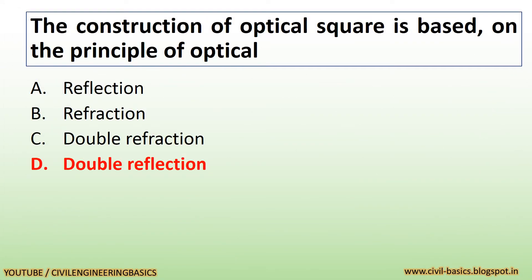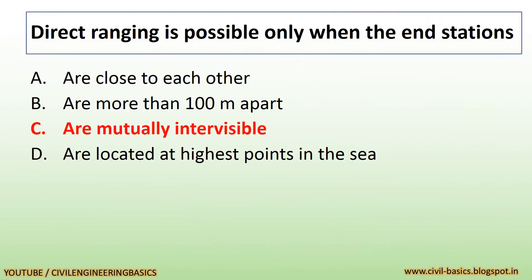The construction of an optical square is based on the principle of optical double reflection. Direct ranging is possible only when the end stations are mutually intervisible.